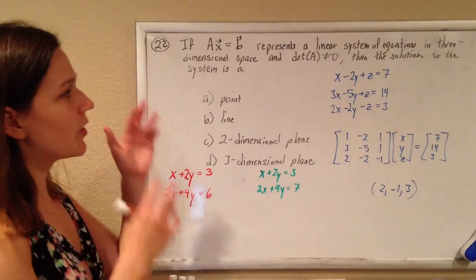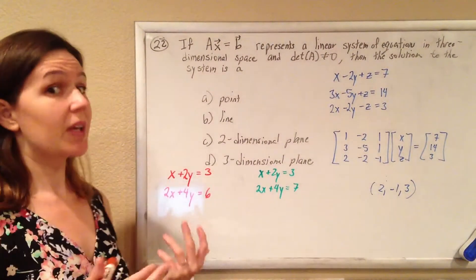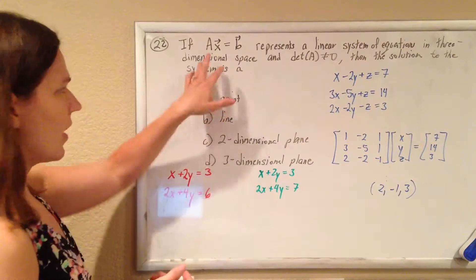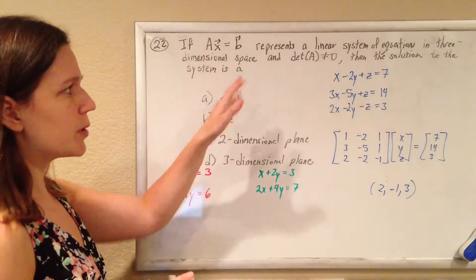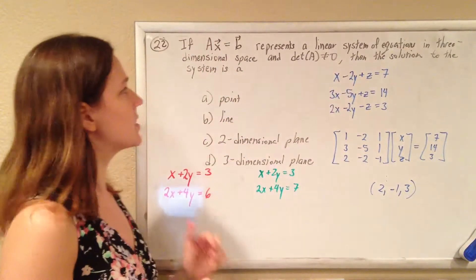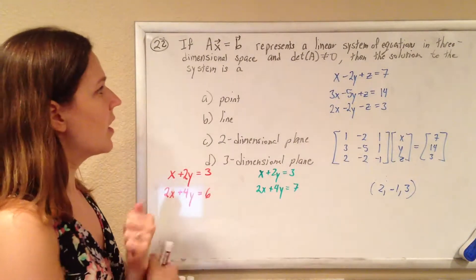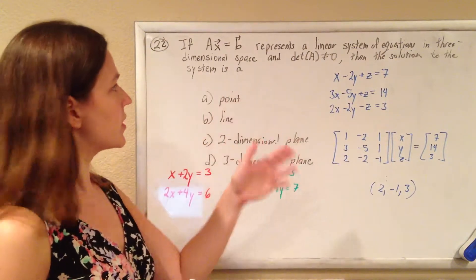Okay, so another scary-looking question with a pretty nice answer. We've got Ax equals b represents a linear system of equations in three-dimensional space, and the determinant of A doesn't equal zero, then the solution...